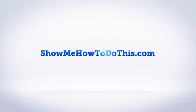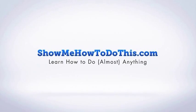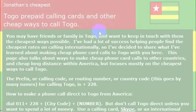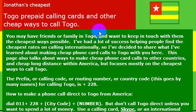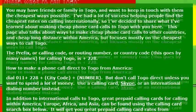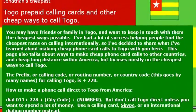To reach Togo from the United States, you will need to take an airplane. But if you want to call there, you can simply pick up the phone and here are some simple instructions about how to do that. I'll detail some less expensive ways to do that a little later on in the video. But just to start off, the country code for Togo is 228.